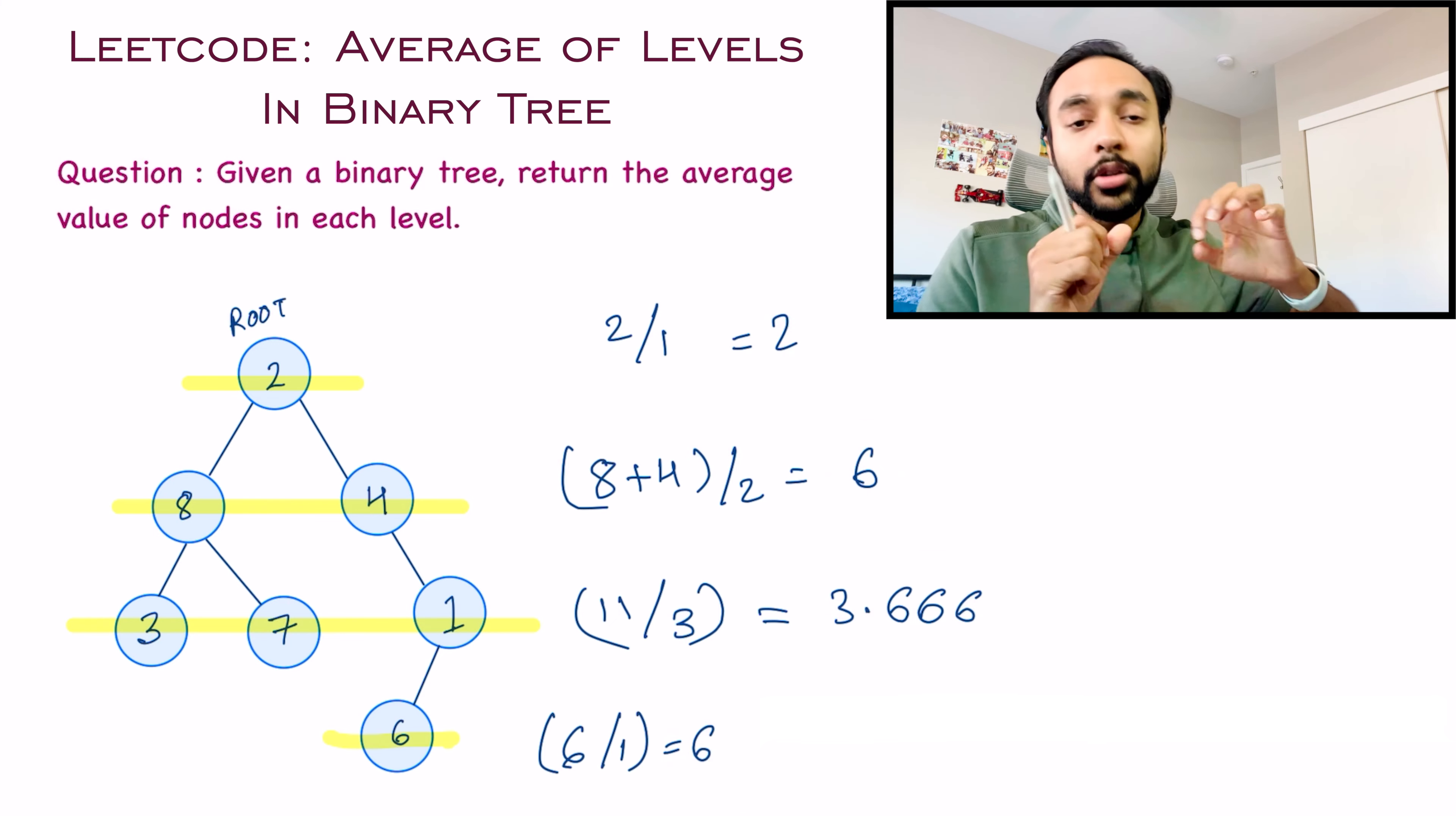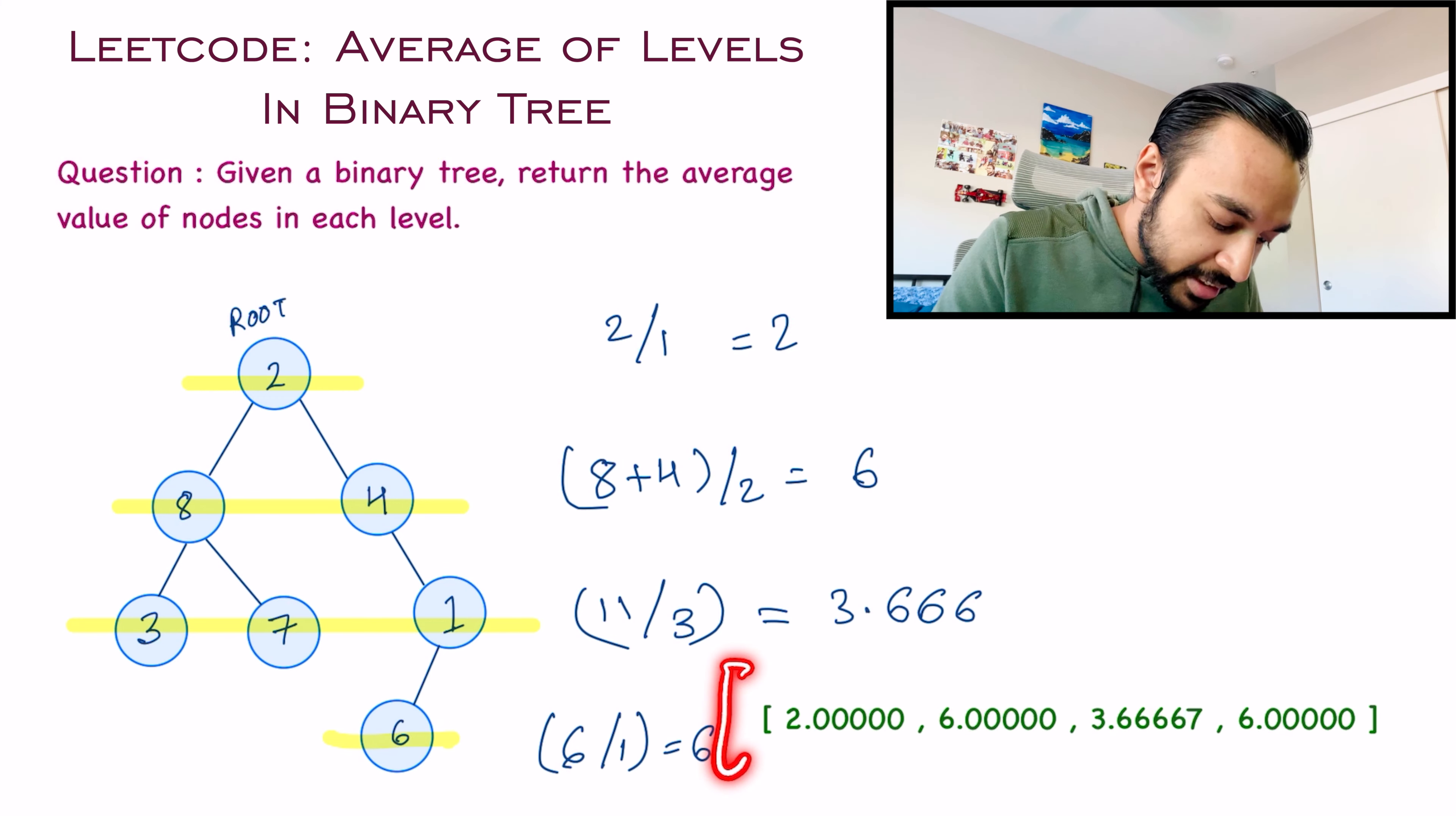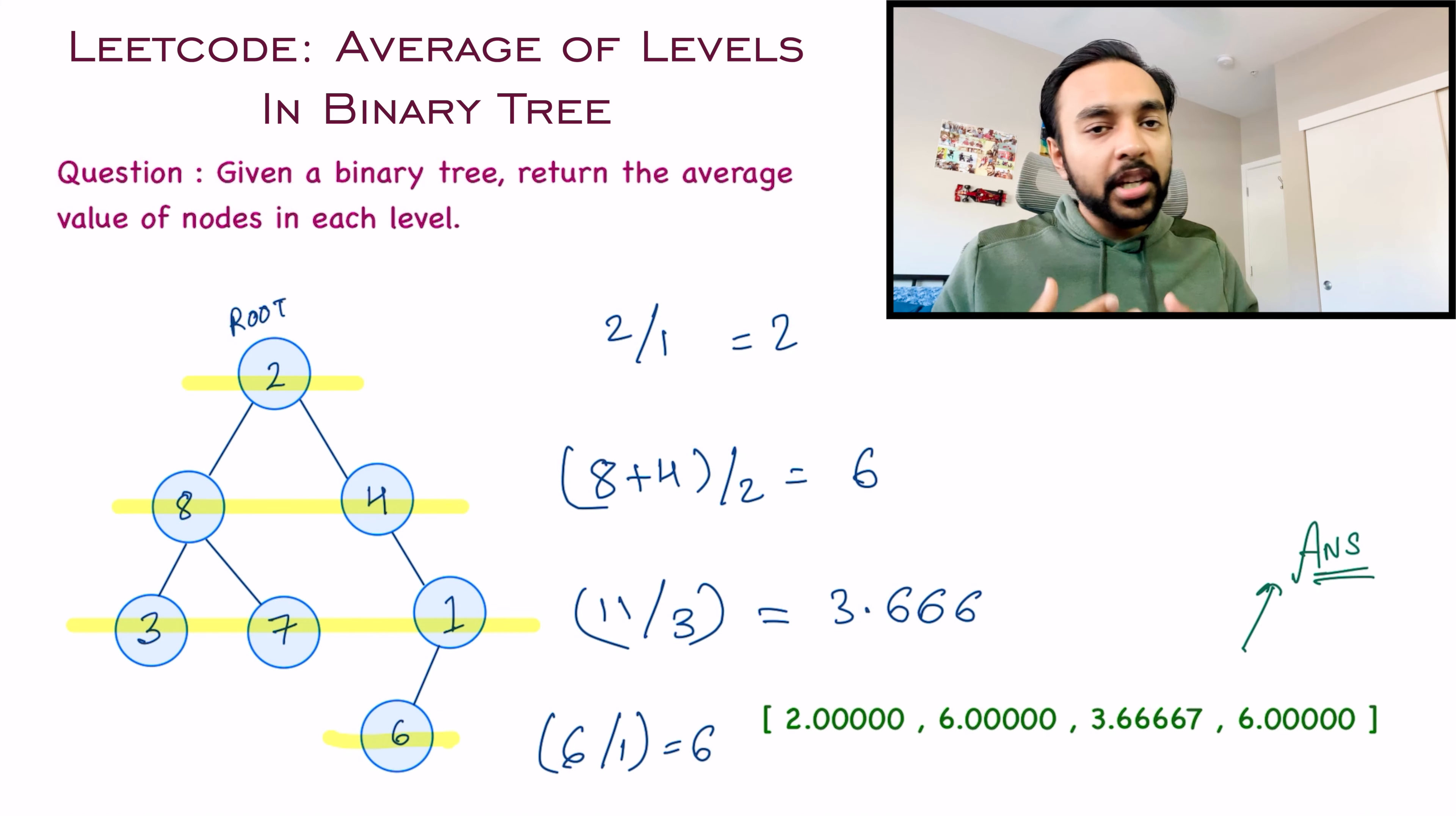So you can see that all of these values are the average values at each level. In this question, you just have to return a list of all of these values in a double representation. So when you would return the result, it would look something like this. And this will be your answer. Now if the problem statement is clear to you and you want to try it out on your own, that's perfect. Try it out first. Otherwise, let us dive into the solution.